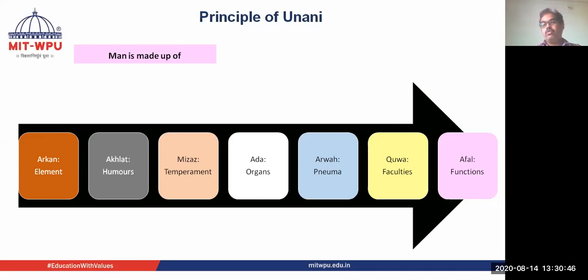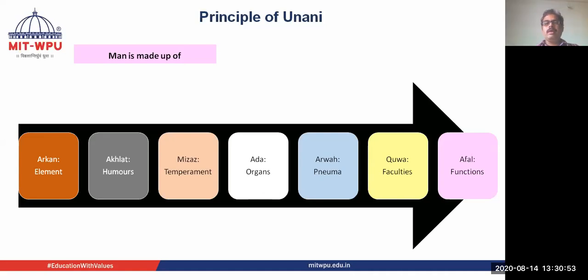Each element has two sets of qualities: hot or cold, and wet and dry. The Unani system says that man is made up of Arkan, that is elements, and Akhlaq.